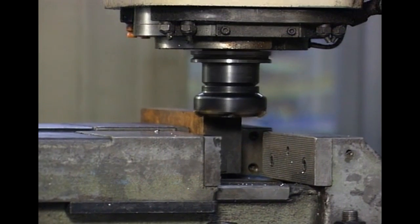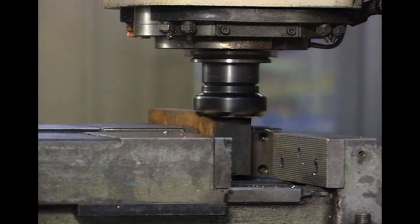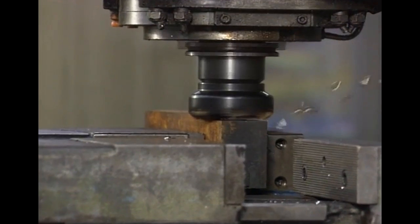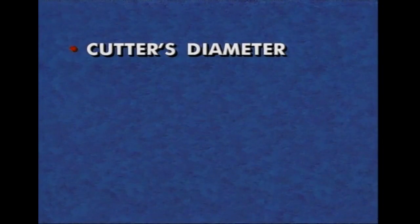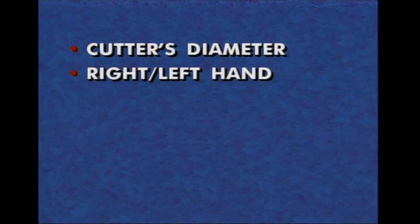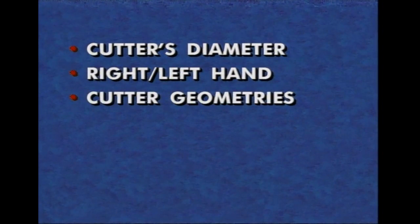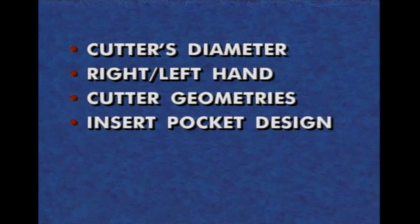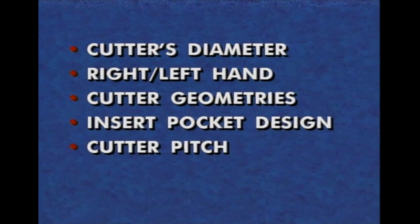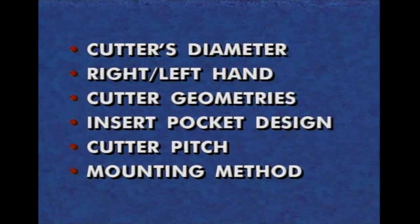There are major variables in the design of face milling cutter bodies which must be considered when selecting tools. These include the cutter's diameter, the hand of cut, the cutter geometries including rake and lead angles, the insert pocket design, the milling cutter pitch, and the cutter's mounting method.